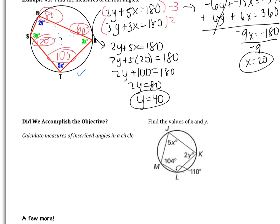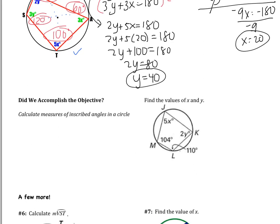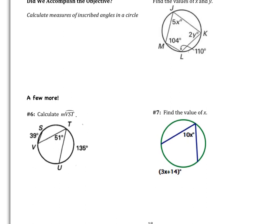Did we accomplish the objective? Our only objective was to calculate the measures of inscribed angles. We learned that an inscribed angle is half of the measure of the intercepted arc; that if two angles intercept the same arc they're congruent; and that a quadrilateral inscribed in a circle requires opposite angles to be supplementary. There are two more examples — pause the video, try them on your own, then come back and listen to the answers.